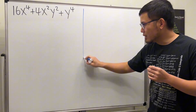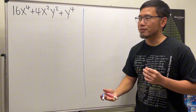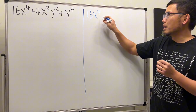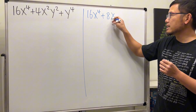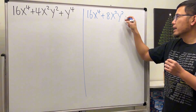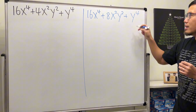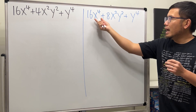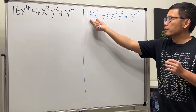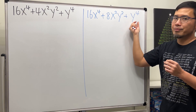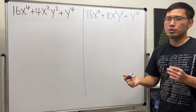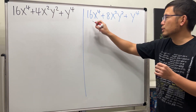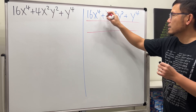Let me give you an easier question to look at first. Suppose we have 16x to the fourth power plus 8x squared y squared plus y to the fourth power. This is actually much easier because we have a trinomial — a first, second, and third term — so we can try to use the tic-tac-toe method, especially since we don't have any common factors.